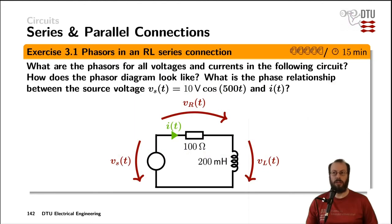The first exercise uses your phasor knowledge on a series connection of a resistor and an inductor. The resistor is 100 ohms, the inductor is 200 millihenry. The source voltage is given by this equation as a cosine wave.